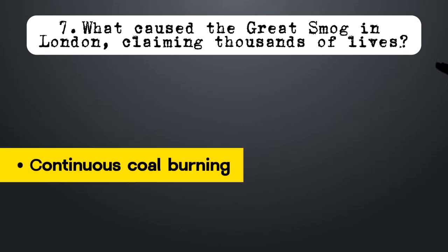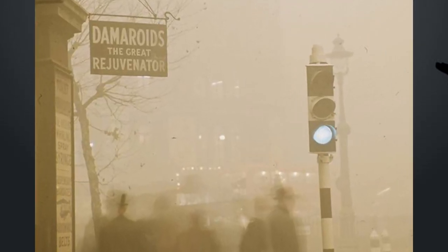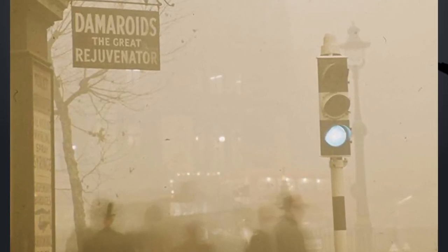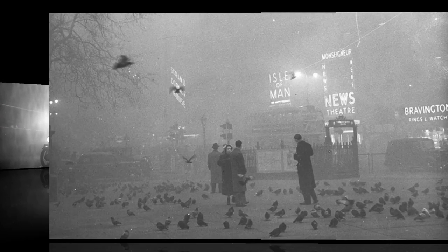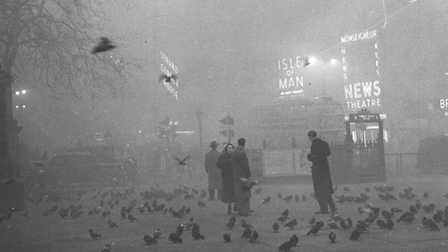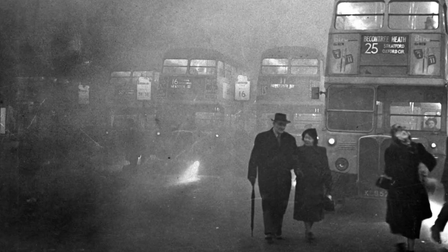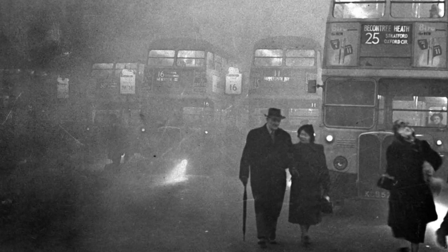In 1952, a chemical fog descended on London, claiming about 12,000 lives. The cause was the release of sulfur dioxide into the atmosphere, resulting in acid rain. The primary cause was continuous coal burning.